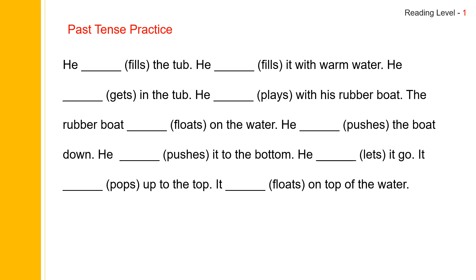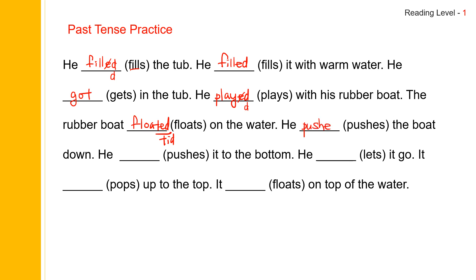Now let us practice past tense. First of all, fill is regular: F-I-L-L, add E-D, and do not pronounce the E — just say filled. And filled. Get becomes got. Play is regular: P-L-A-Y-E-D, and played. Float is regular: F-L-O-A-T-E-D, so it sounds like -ted. Floated or floated. Push is regular: P-U-S-H-E-D. Say pushed. Pushed.